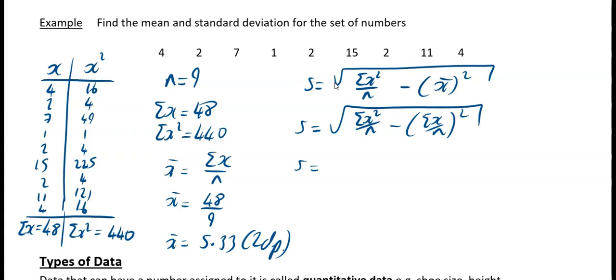Now you want to just fill in your formula. So sigma x squared, we had worked out to be 440, n we have set as 9, minus, and then that is going to be 48 divided by 9, and then that's squared, and then the square root of all that, and then your s is equal to 4.52 to 2 decimal places.